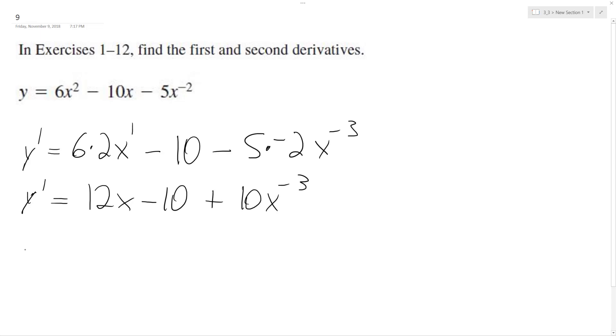So y double prime is going to be equal to, derivative of x is 1, so 12, and then derivative of 10 is 0, plus, bring down negative 3 times 10, x raised to the negative 4.